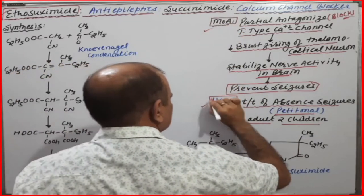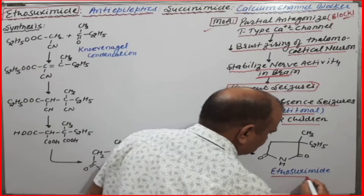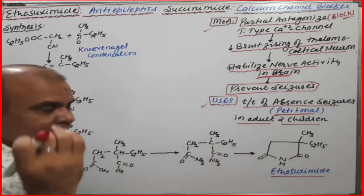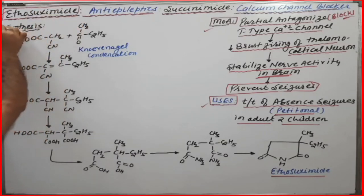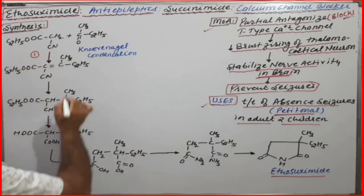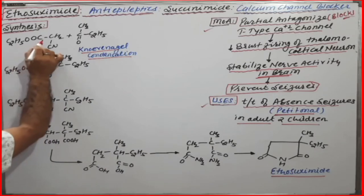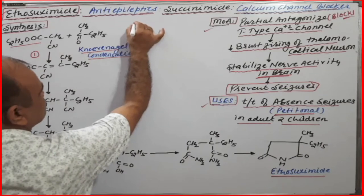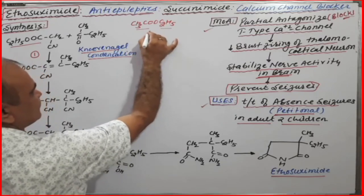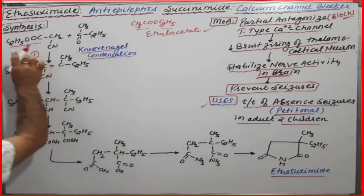Now we come to the synthesis and structure of ethosuximide. The first synthetic step is very important — it is a Knoevenagel condensation. The starting materials are ethyl acetate (CH₃COC₂H₅) with a cyano group, giving cyanoethyl acetate.